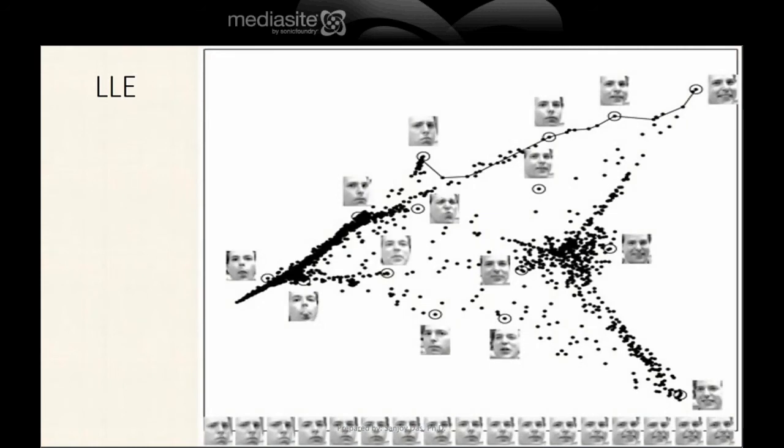This is an example output of LLE for several sample faces. You can see that in the two-dimensional embedding, it does make sense. Each black point corresponds to a face, and the circled ones are shown. If you look at this connected line, the face goes gradually from frowning to smiling as we follow this trajectory.